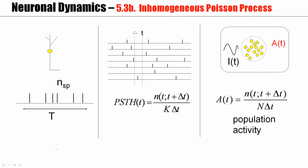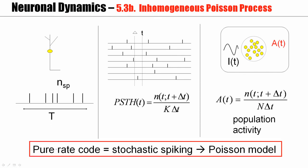We have seen that there are all these different definitions of rate coding, and I would like to convince you that if you think of a rate code where the exact timing of a spike doesn't play a role — where spikes can jitter a little bit — then a Poisson model is an appropriate description.